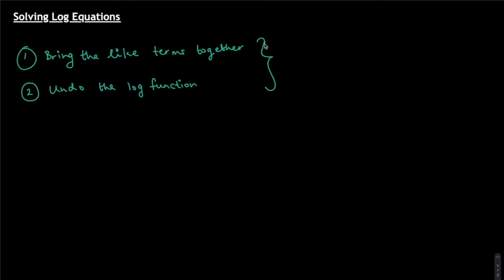You're only going to use these steps for the non-calculator section — Paper 1. For Paper 2, you have a calculator; you can put the two log functions in the calculator, plot them out, and find the intersection points — those are the solutions of your equation. Such log equations in Paper 1 will be for five or six marks, testing your knowledge of log properties and whether you know how to apply them. I'm going to focus on questions you should be able to do without a calculator, so you get in the habit of using and recalling the properties.